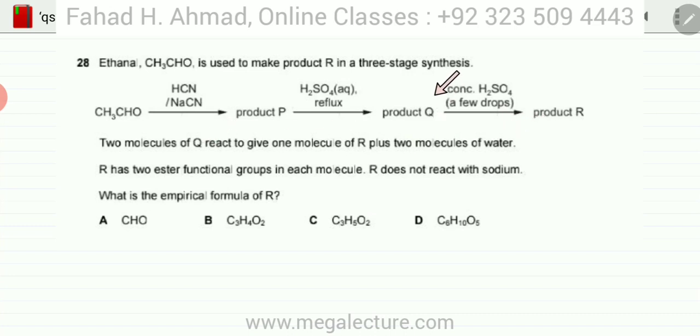Two molecules of Q react to give one molecule of R plus two molecules of water, and R has two ester functional groups in each molecule. R does not react with sodium and you're being asked what is the empirical formula of R. So we need to figure out what R is.